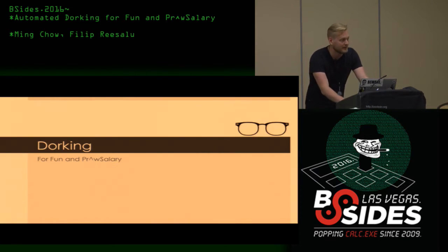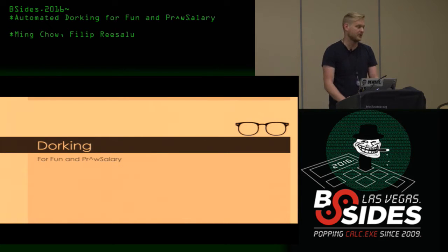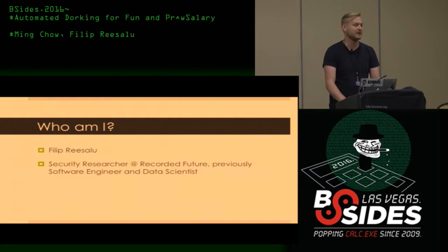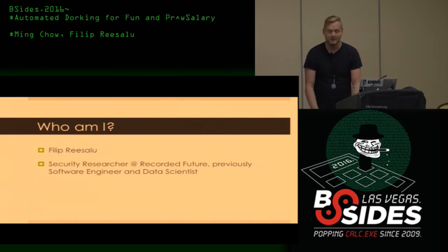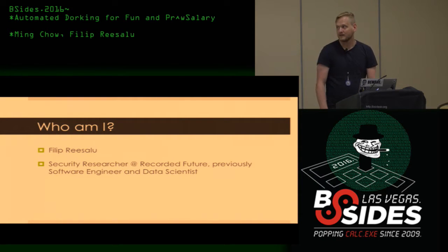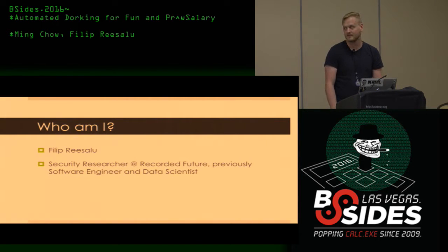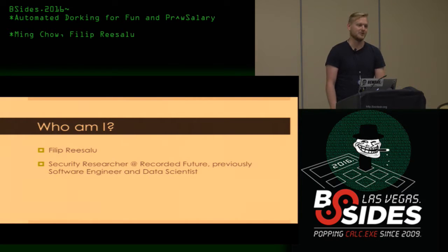I'm going to talk about a side project I've been working on involving dorking. Most of you probably know what it is, I'll do a quick introduction. I probably won't use my entire 30 or 40 minutes, so we'll be free to drink beer. My name is Philip Rieslew. I'm currently a security researcher at Recorded Future. I used to be a software engineer in linguistics and then I was in a much-hyped data scientist role for a while.